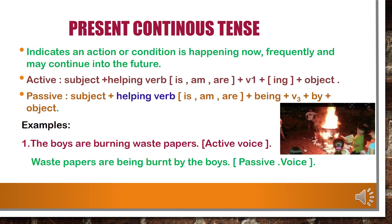Let us try to understand with an example. In active voice: 'I solve the problem.' Now we have to change this sentence from active voice into passive voice. In passive voice: 'The problem is solved by me.' The problem is the object in active voice and now becomes the subject in passive voice. 'Is' is the helping verb, 'solved' is the V3 form of the verb, 'by' comes before the object, and 'I' changes to 'me' as the object in passive voice.